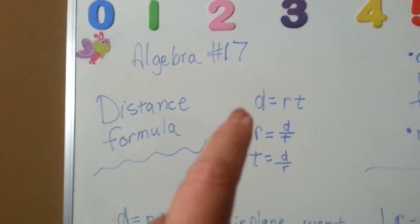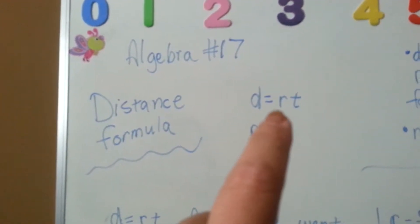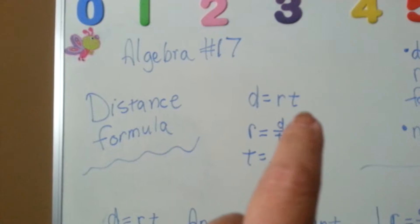In the distance formula, D means distance, R means the rate, and the T means the time.